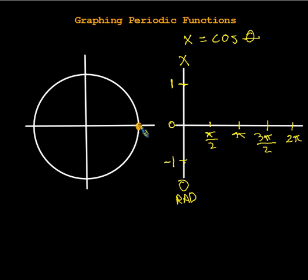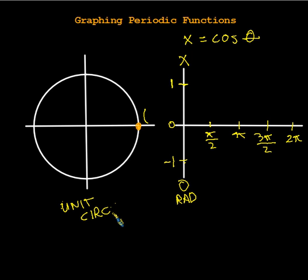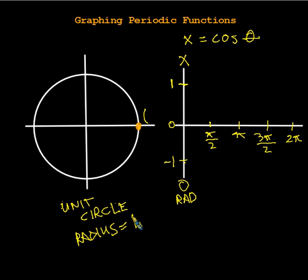We're going to start off over here at this point and say, hey, I know that the coordinates of this point — by the way, this is a unit circle, and there's something important we assume about a unit circle. What is the main thing we should remember about unit circles? It's that the radius equals 1. Unit, like the word uno, relates to 1.